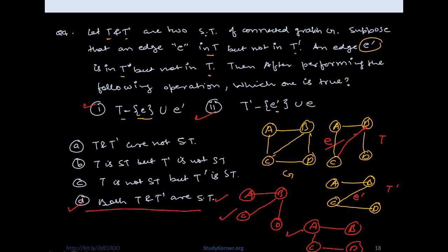The next question: suppose T and T' are two minimum spanning trees of a connected graph. Edge E is in T but not in T', and edge E' is in T' but not in T. If we remove E from T and add E', and remove E' from T' and add E, which statement is true? The options are: resulting trees are not spanning trees; T is a spanning tree but T' is not; T is not but T' is; or both are spanning trees.